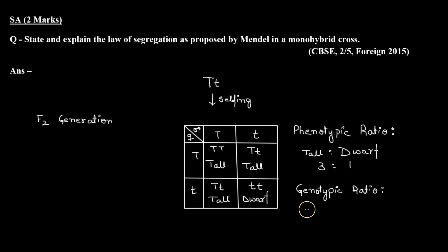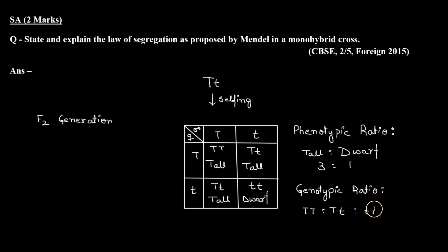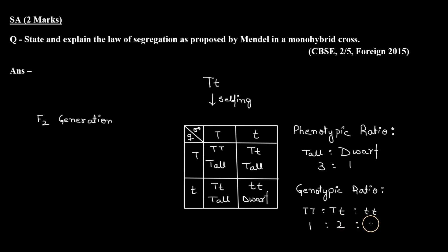If we talk about the genotypic ratio, we have three types of genotypes: capital T capital T, capital T small t, and small t small t. Capital T capital T — one plant; capital T small t — two plants; small t small t — one plant. So the genotypic ratio will be 1 to 2 to 1.